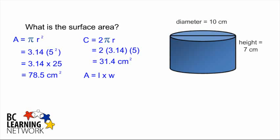A rectangle is length times width. So our two dimensions are 31.4 times 7, giving us a total of 219.8 centimeters squared.